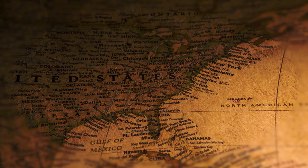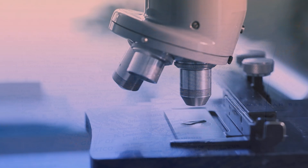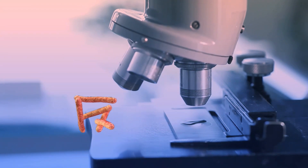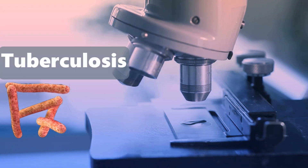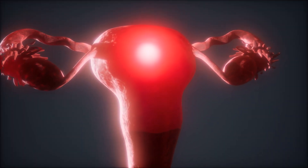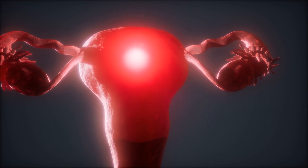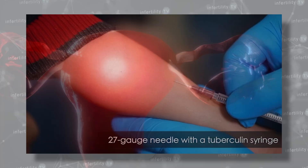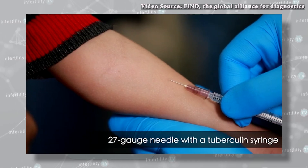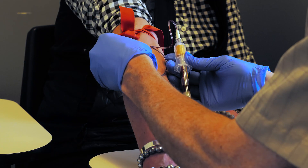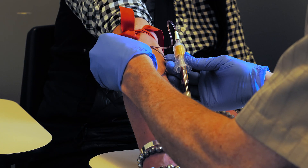Outside of the US, the bacteria that causes tuberculosis in the lungs can also infect the uterus and fallopian tubes, causing inflammation, damage, and obstruction. Tuberculosis can be diagnosed with a skin test or a blood test.